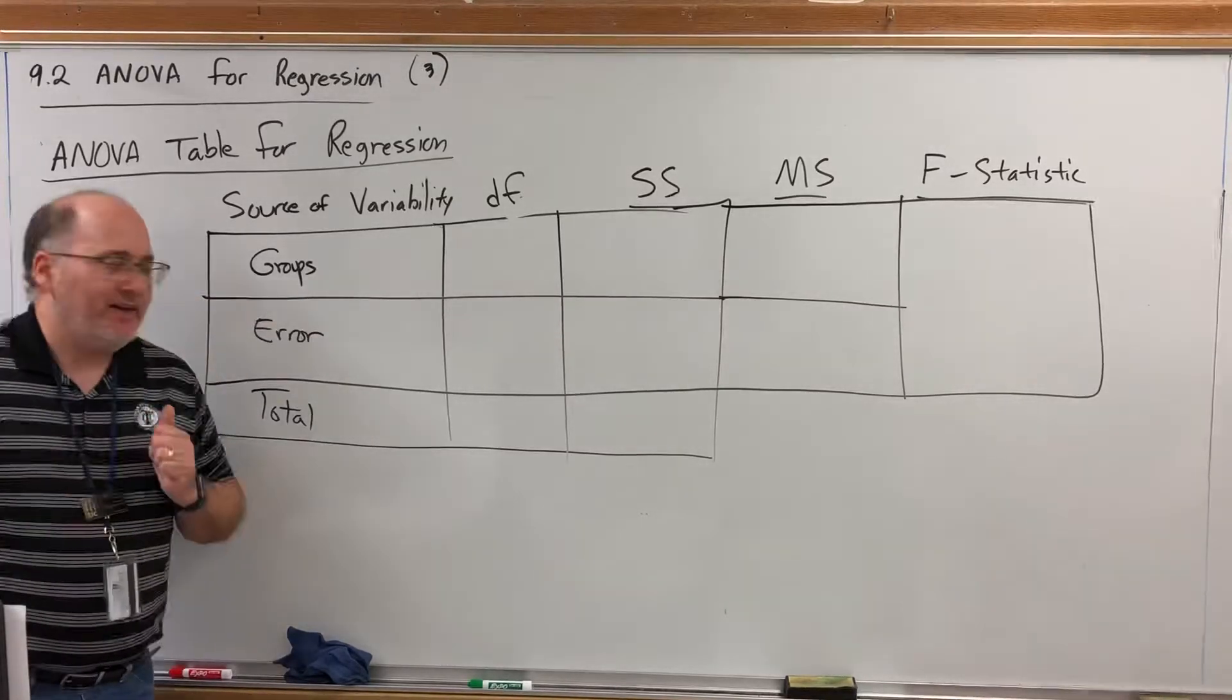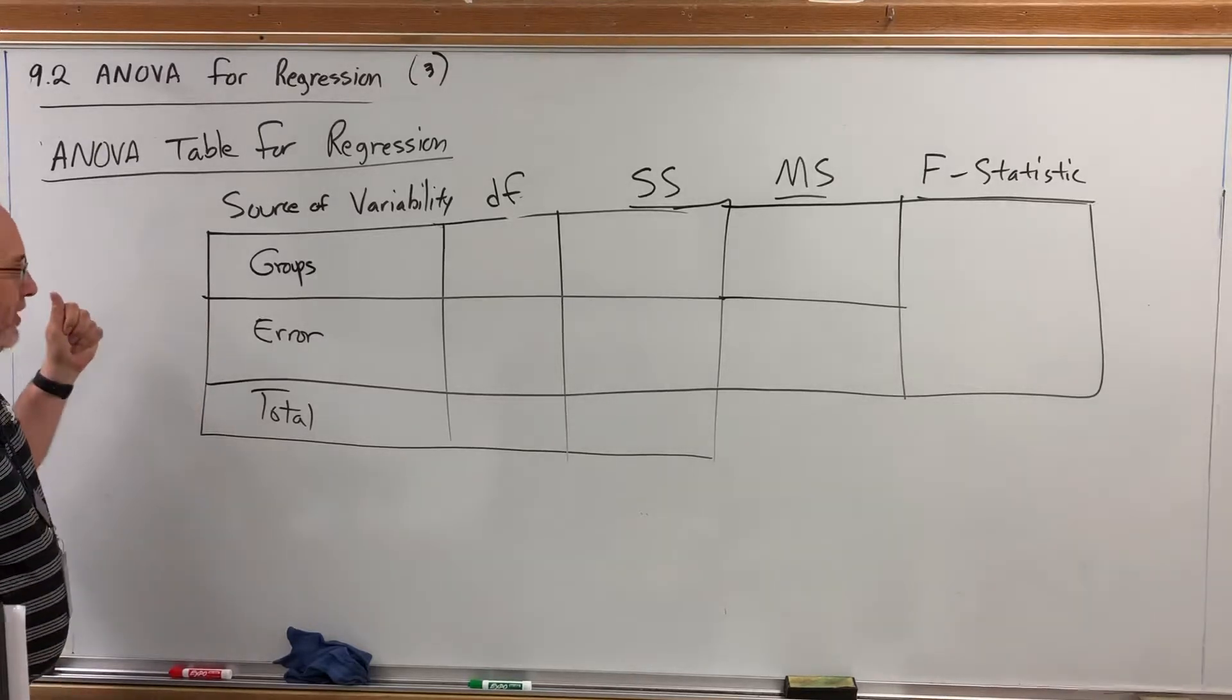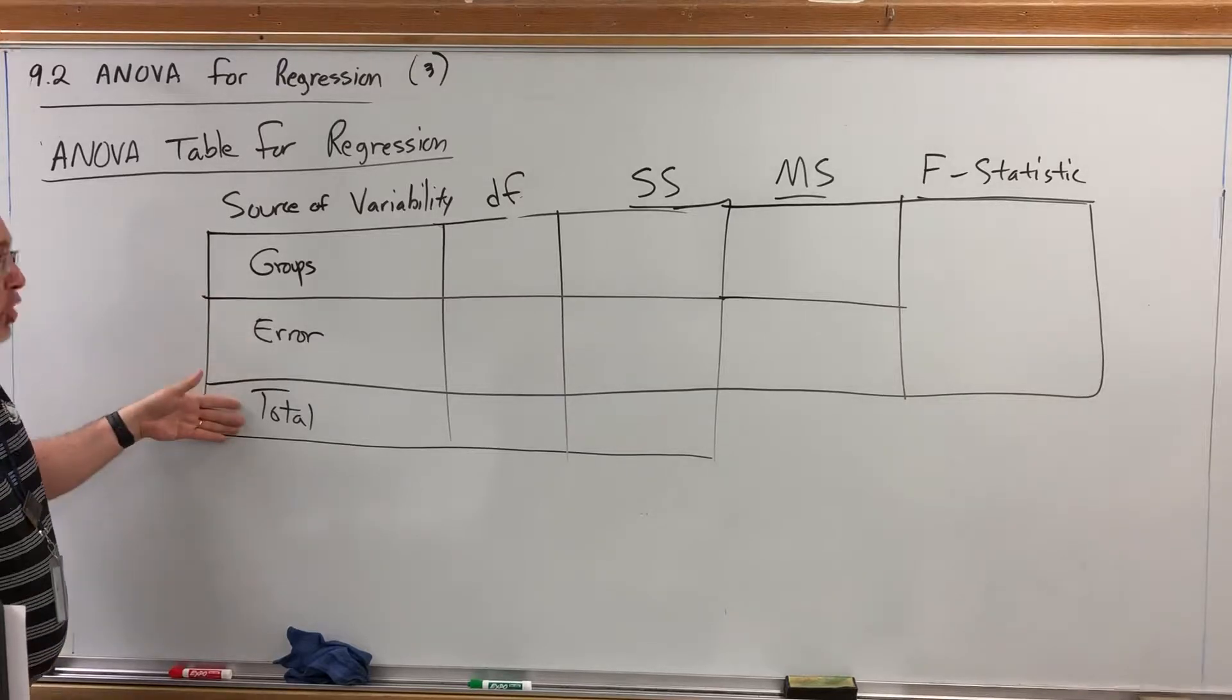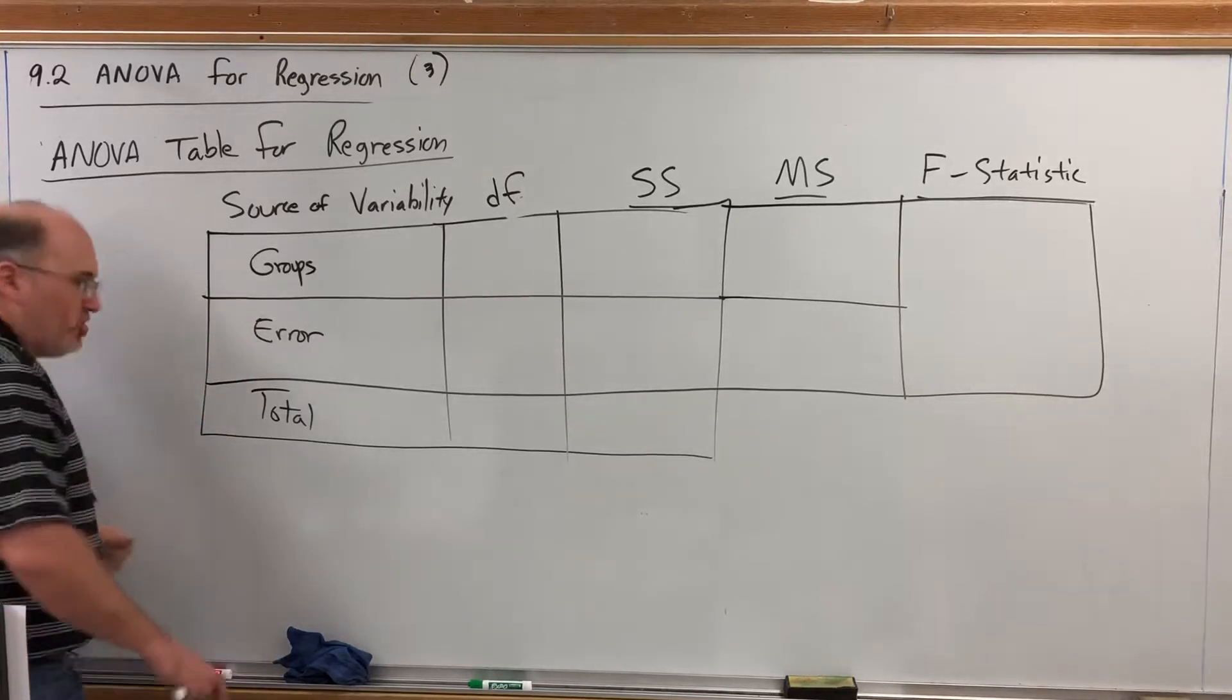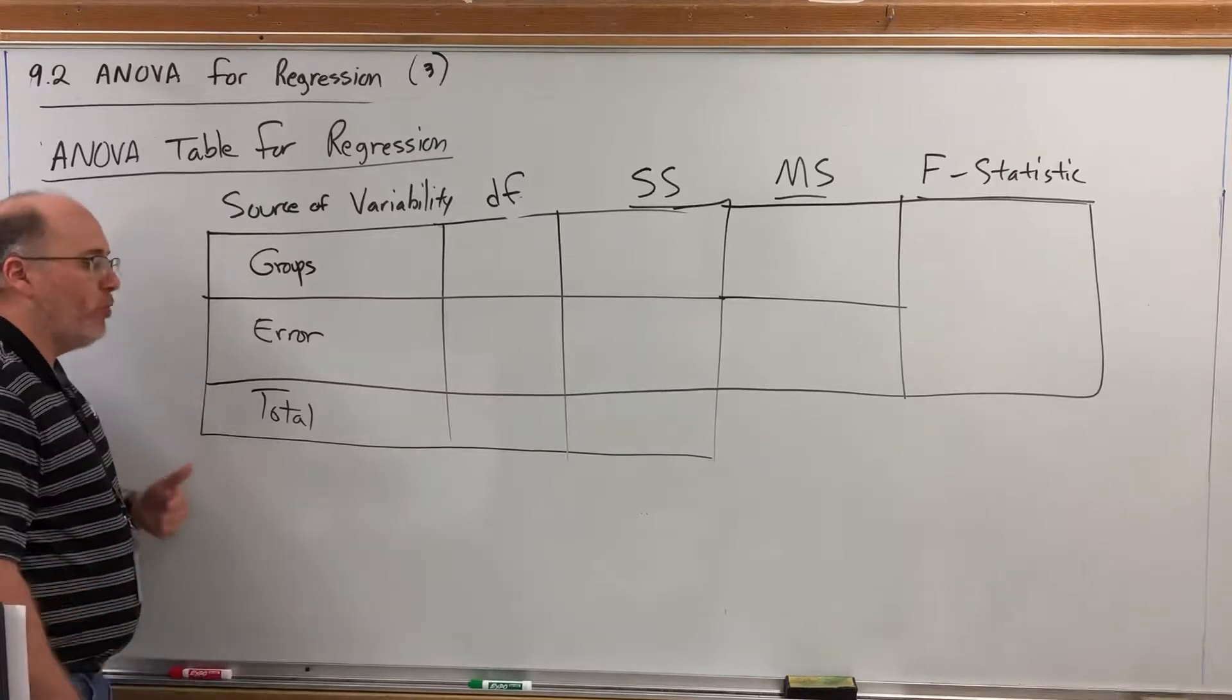We had three sources of variability. Well we had two sources. We had groups and errors and together they made the total variability. But I wanted to start with what we previously had to show you how it differs from what we're about to do.